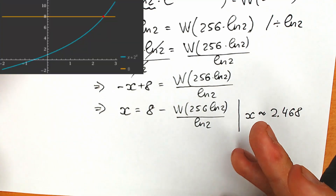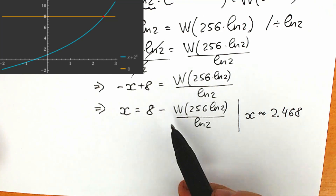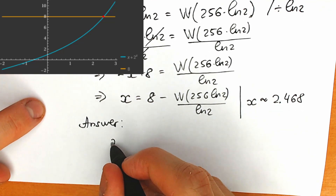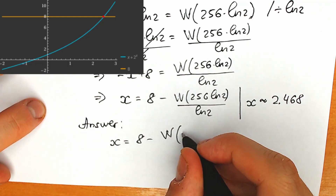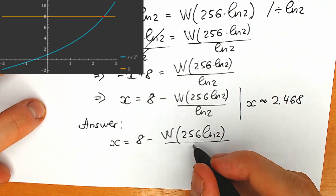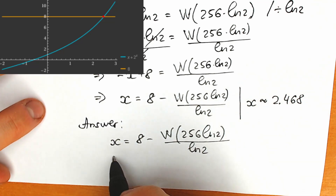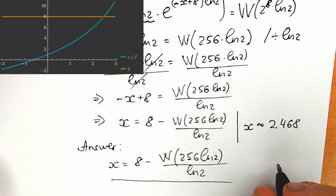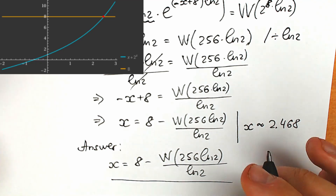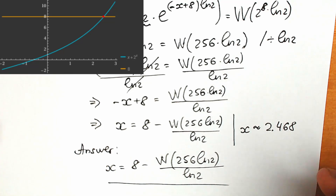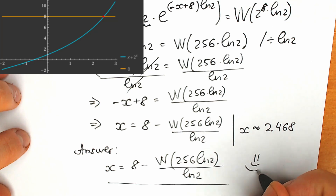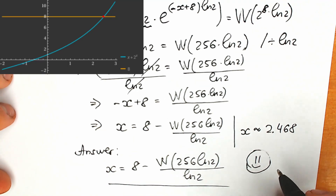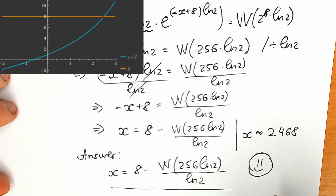Don't be scared about this Lambert W function — it's a constant, and Lambert W of a constant is also a constant. You can easily plug it into a calculator to check. If you're not allowed to use a calculator on your exam, you can leave the answer in this exact form — that's perfectly acceptable. Our final answer is x equals 8 minus W(256 times natural log 2) over natural log 2. Thank you everyone for your time, wish you all the best, take care of yourself, and see you in the next videos.